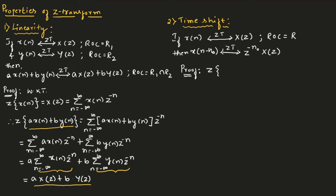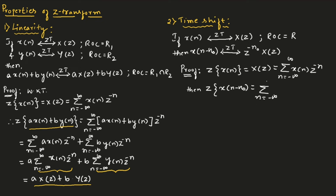Proof: Z transform of X of n is X of Z, which can be written as summation from N equal to minus infinity to infinity of X of n times Z to the power of minus N. Then Z transform of X of N minus N naught will equal summation from N equal to minus infinity to infinity of X of N minus N naught times Z to the power of minus N. Let us put N minus N naught equal to L, so N equals L plus N naught.